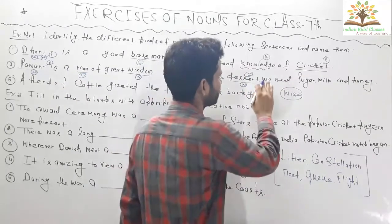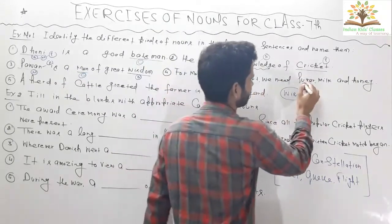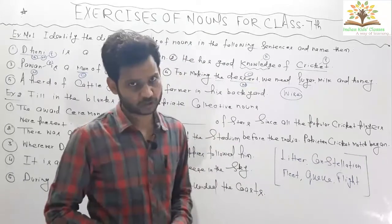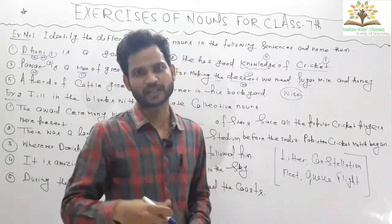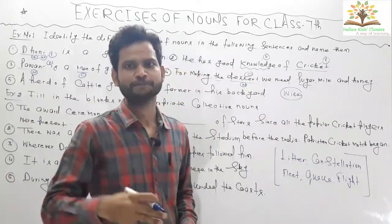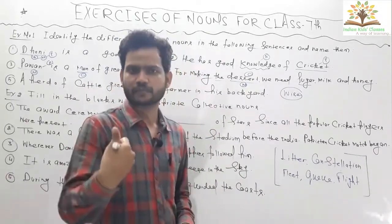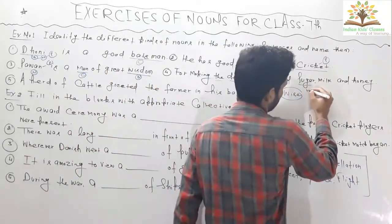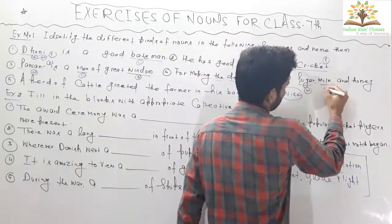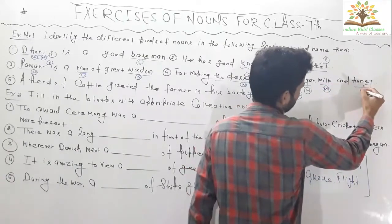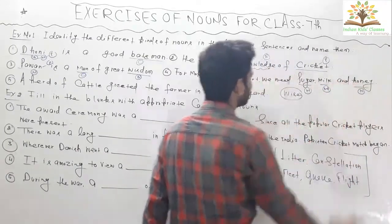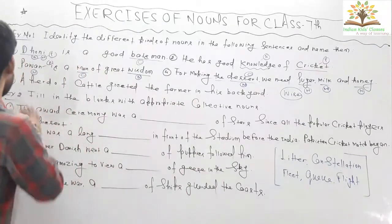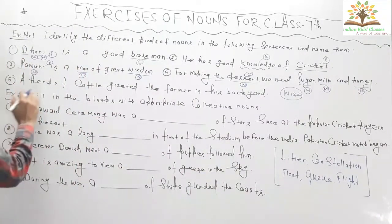Moving on: we need sugar. Sugar is a material noun because through material nouns we can make new things — like chocolate, coffee, tea. Sugar is a material noun, milk is also a material noun, and honey is also a material noun. These are all material nouns.